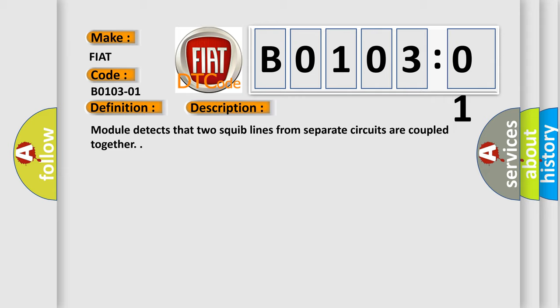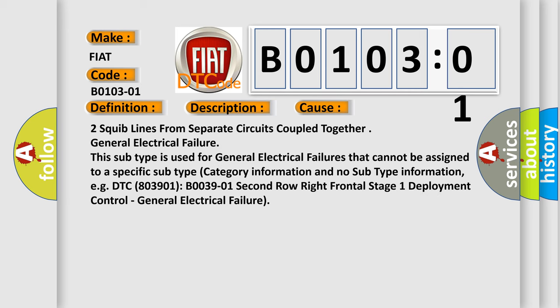This diagnostic error occurs most often in these cases: two squib lines from separate circuits coupled together, general electrical failure. This subtype is used for general electrical failures that cannot be assigned to a specific subtype category information and no subtype information.